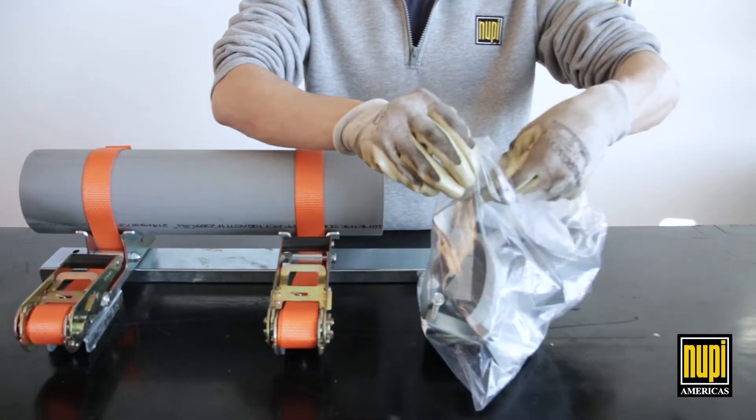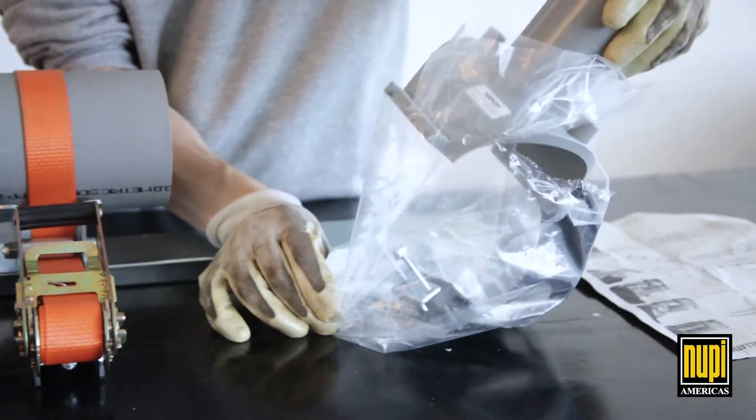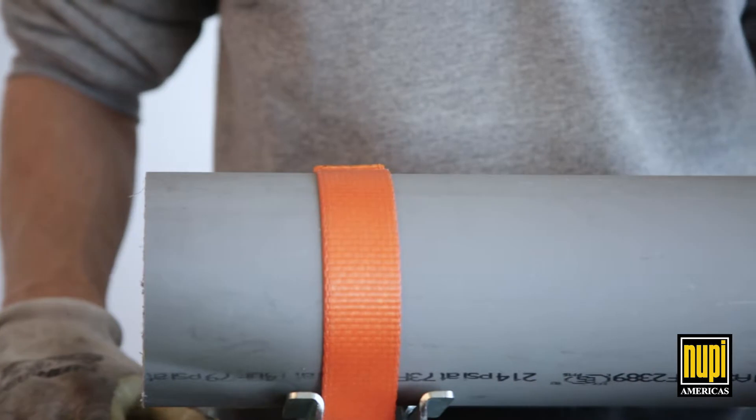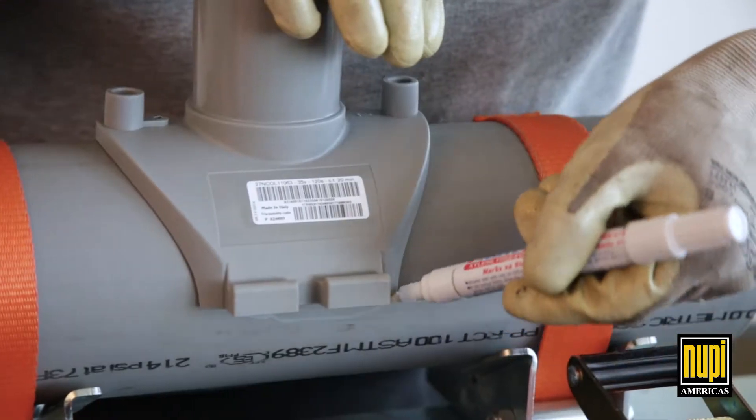Electrofusion branch saddles can be used to install reducing branches onto niron pipes in any position. Start by measuring the length of the fitting and mark the welding area with a marker.